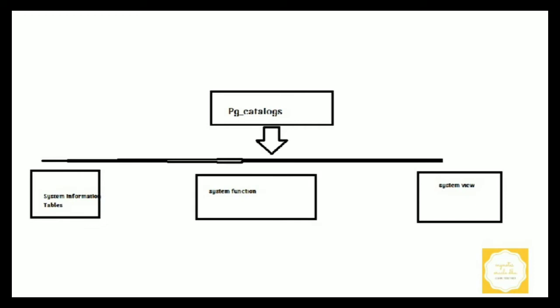System information tables are used to store information about databases. System functions access and change that information. System views access information from the pg_catalog schema. There is a list of system information tables available inside pg_catalog, and this schema is always a part of the search path. To view them, there is a meta command called backslash dS (capital S).